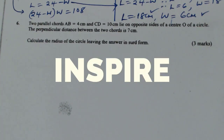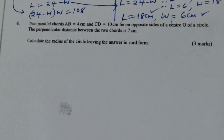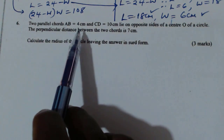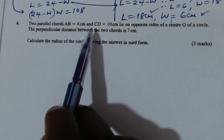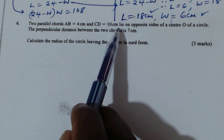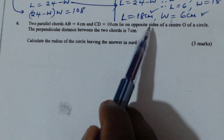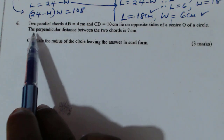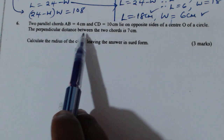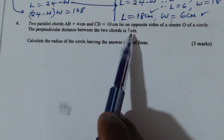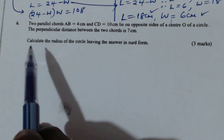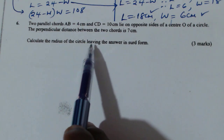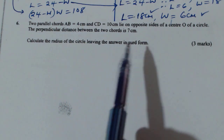Question number 6. Two parallel chords AB equals 4 cm and CD equals 10 cm lie on opposite sides of the center of a circle. The perpendicular distance between the two chords is 7 cm. Calculate the radius of the circle, leaving your answer in surd form.